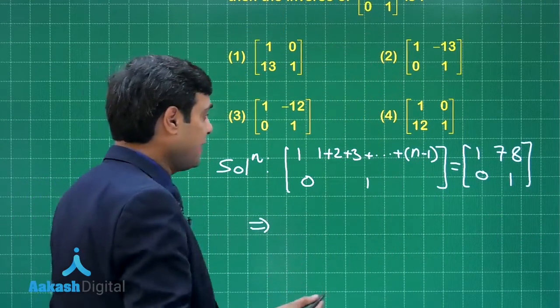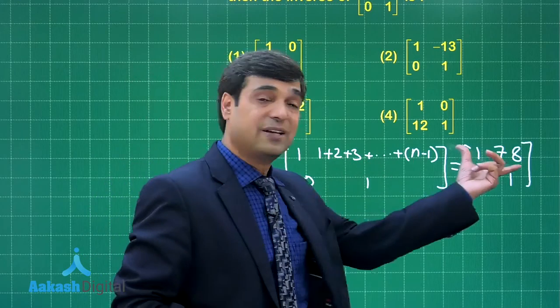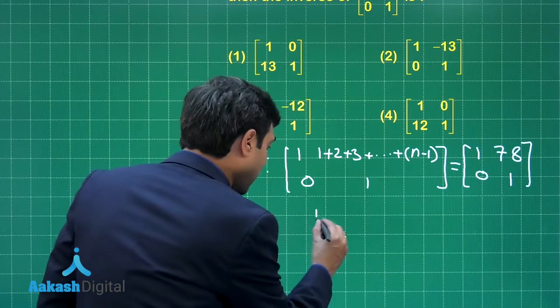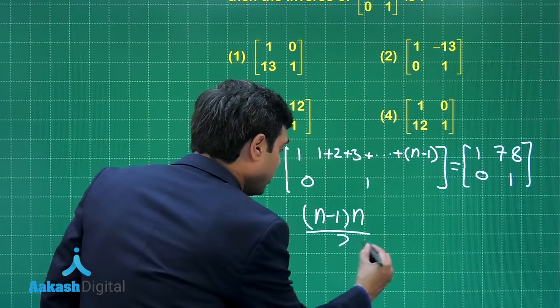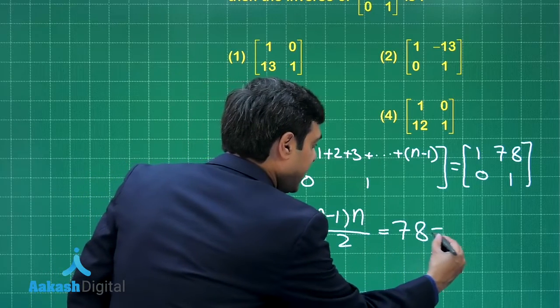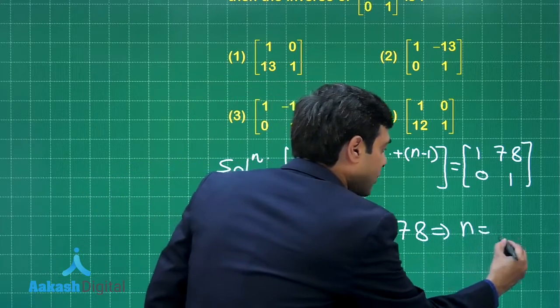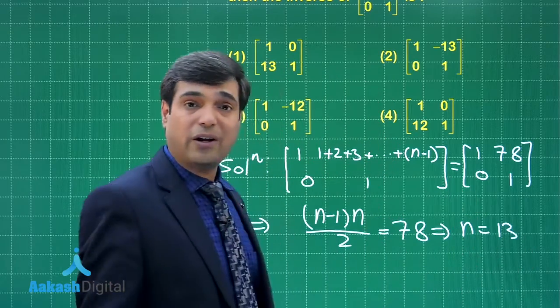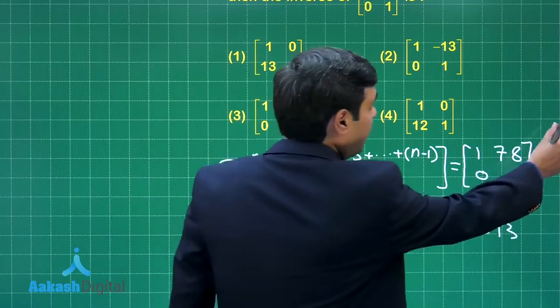This equals [1 78; 0 1]. Now equate the elements. This summation equals 78, so we have (n-1)×n/2 = 78, which gives n = 13. We got our matrix for which we have to find the inverse.